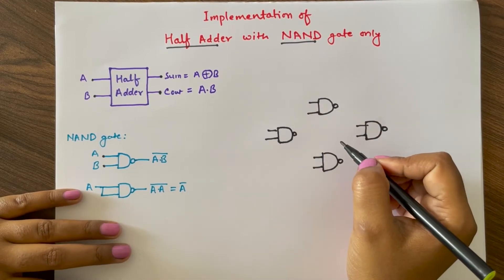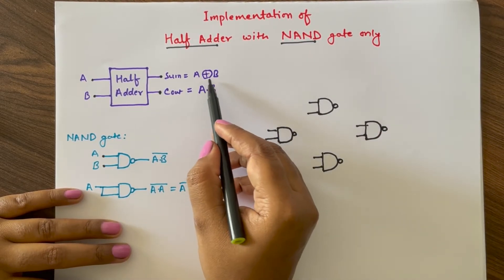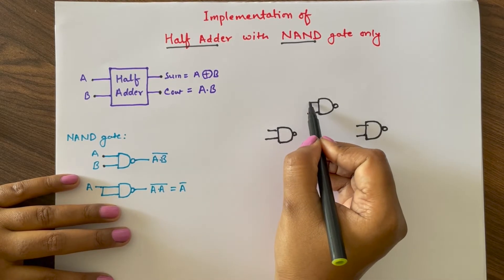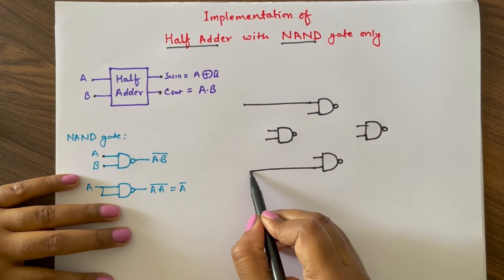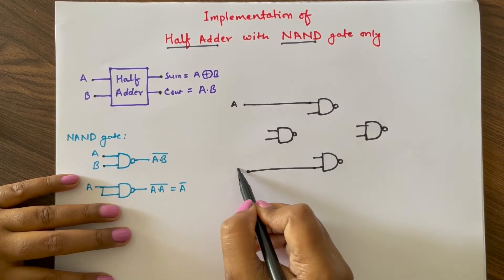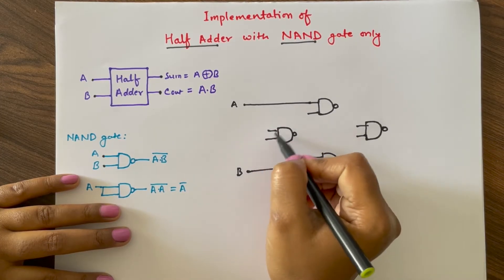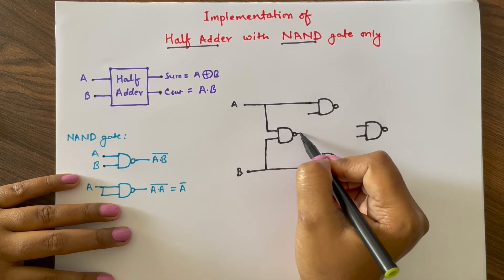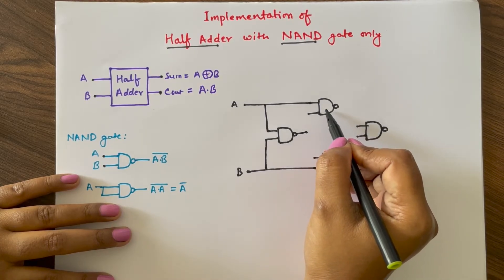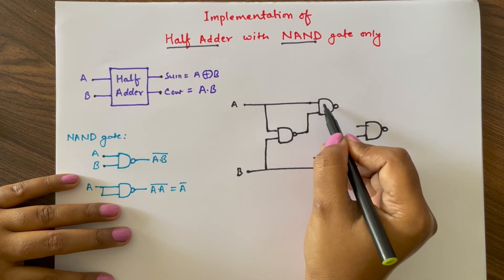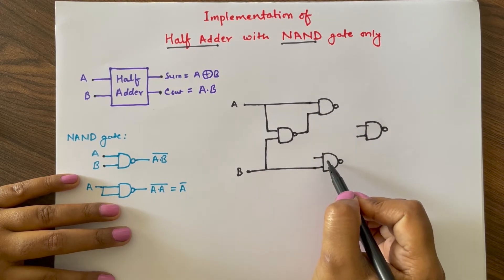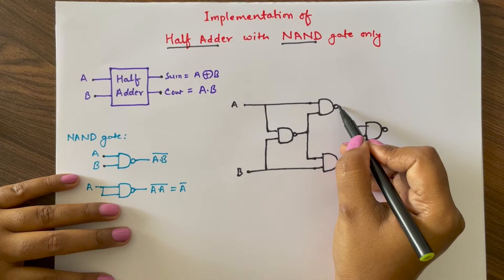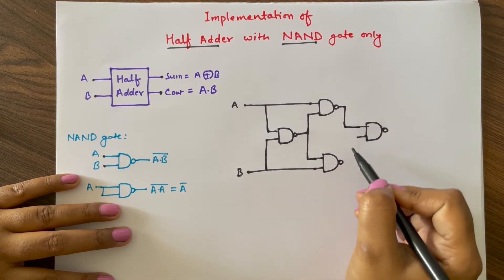These are all two-input NAND gates. For realizing the XOR gate we need two inputs A and B, so we will give two inputs A and B like this. This A and B will be given to the first NAND gate. The output of this NAND gate will be given to the second NAND gate along with A, and to the third NAND gate along with B. The output of these two NAND gates will be given to the fourth NAND gate.